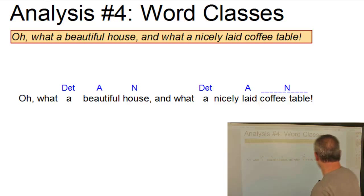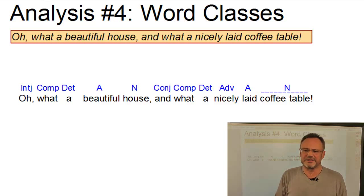Now, laid itself is modified by an adverb, nicely laid. And finally, we have two occurrences of the complementizer what: what a beautiful house, what a nicely laid coffee table. And finally, we have an interjection, an O at the beginning and the conjunction and in the middle.